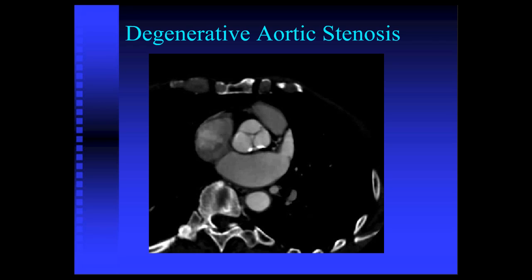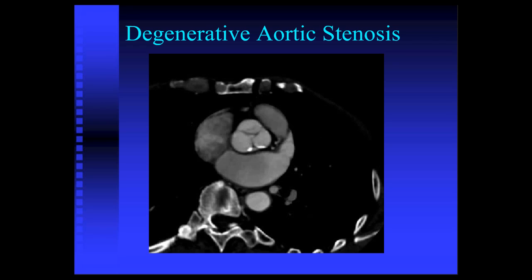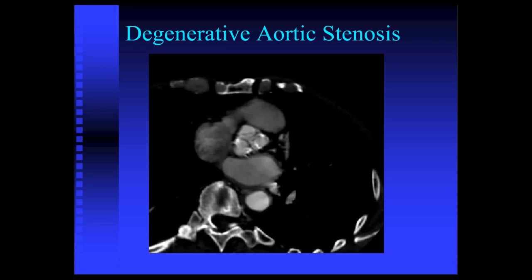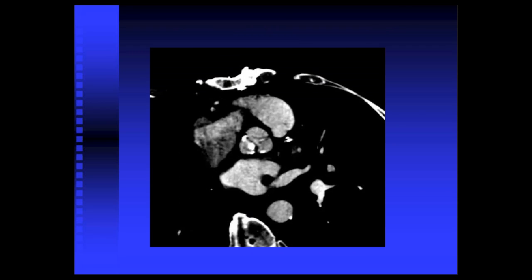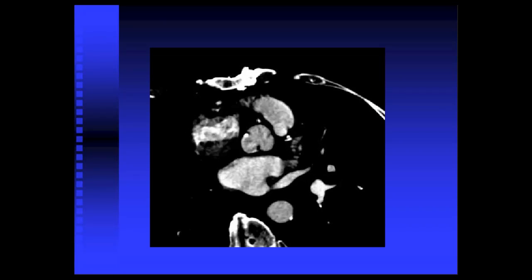With cine imaging, we can get real views of degenerative aortic stenosis. In this patient with moderate aortic stenosis, we can see the degree of calcification and the limited coaptation and excursion of the valve leaflets. In a patient with severe aortic stenosis, cine imaging shows the limited excursion of the leaflets, partial fusion between the right and left leaflets, and the limited excursion of the valve leaflet during systole.